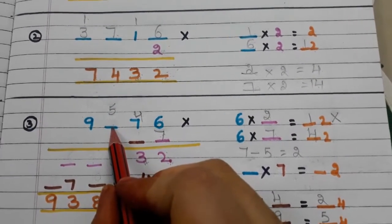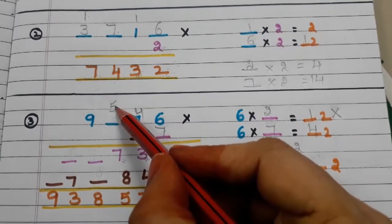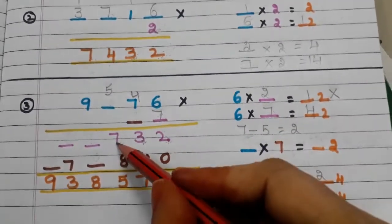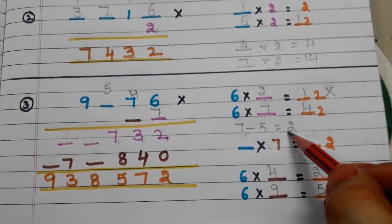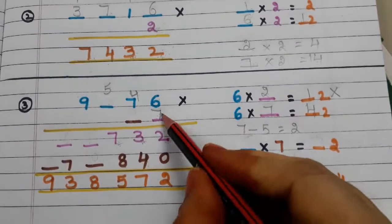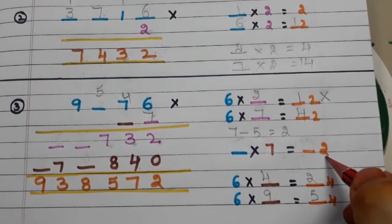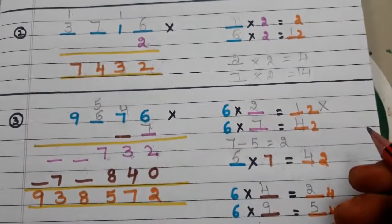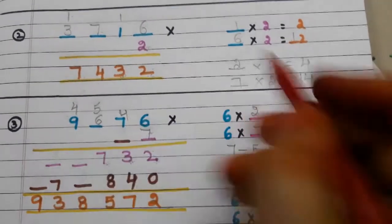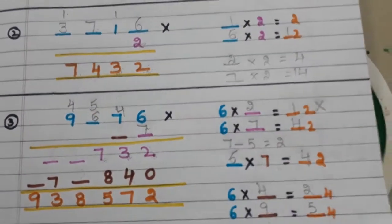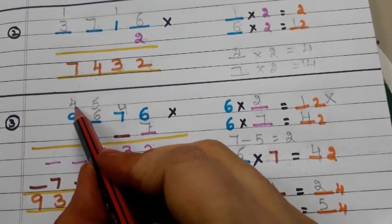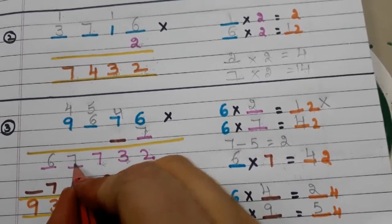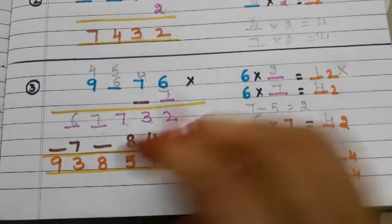We write the carry over here. To find the next digit, we subtract the carry from the result: 7 minus 5 is 2. With what number do we multiply 7 to get 2 in the units place? 6 sevens are 42, so the digit is 6, with carry 4. 7 nines are 63, plus 4 is 67. Now let us find the other digit in the multiplier.